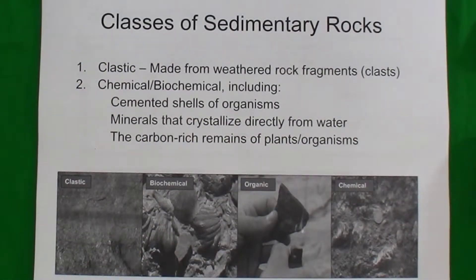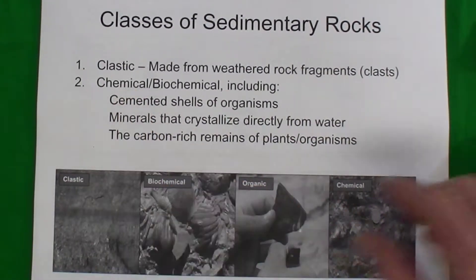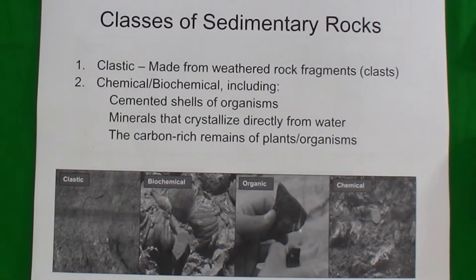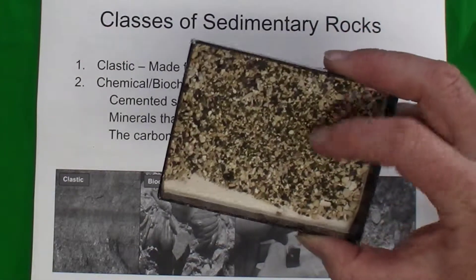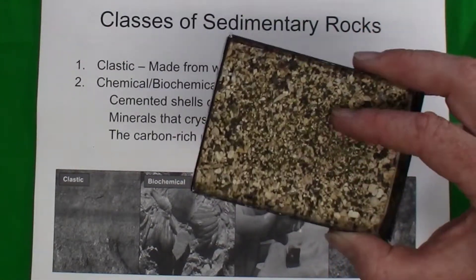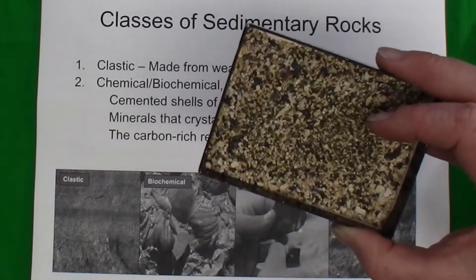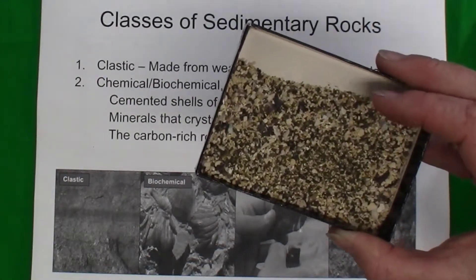There are two broad categories of sedimentary rocks. The first are clastic rocks, which are rocks made from weathered rock fragments called clasts or pieces of sediment. Here is an example of some unconsolidated sediment — if this were to become cemented together naturally, you would have a clastic sedimentary rock.